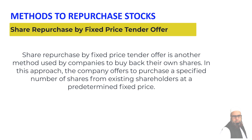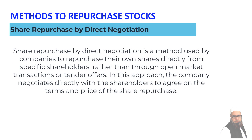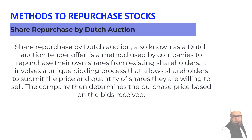Repurchase by direct negotiation is a method where the company repurchases its own shares directly from specific shareholders, rather than through open market transactions or a tender offer. In this approach, the company negotiates directly with shareholders to agree on the terms and price of the share repurchase. Share repurchase by Dutch auction — also known as a Dutch auction tender offer — involves a unique bidding process that allows shareholders to submit the price and quantity of shares they are willing to sell. The company then determines the purchase price based on the bids received.